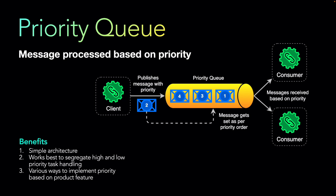This is a simple architecture that works best to segregate high and low priority task handling. You can implement multiple queues — for example, all priority-one messages go to queue one, priority-two to queue two — with queue one having higher priority. You can also separate consumers so that some handle high-priority messages and others handle lower-priority ones, with various segregations depending on your product requirements.